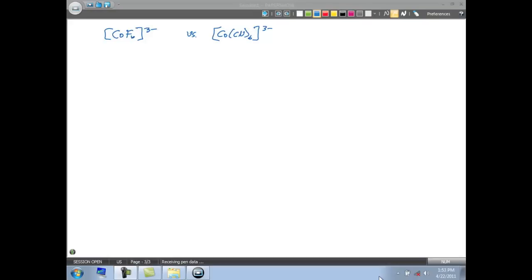If we look at each of these transition metals, we have cobalt, which is a 3D transition metal. And it's gonna have, if we're cobalt three plus, it's gonna have six valence electrons.